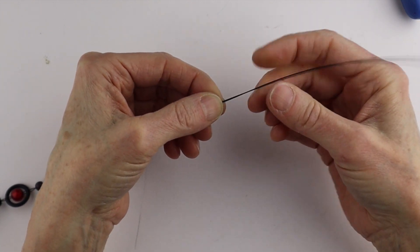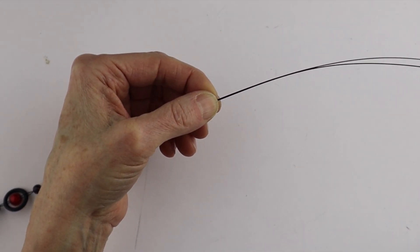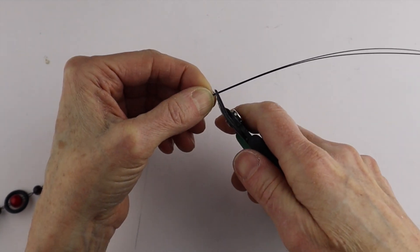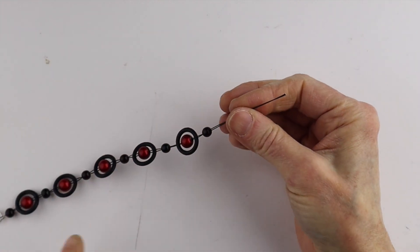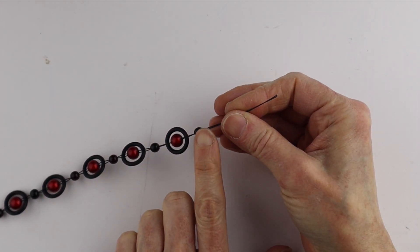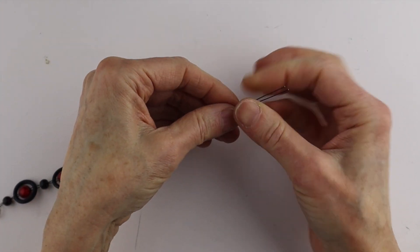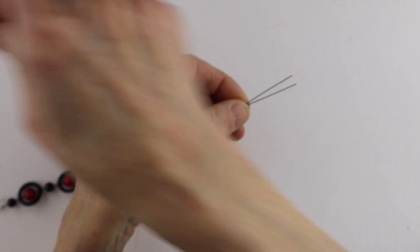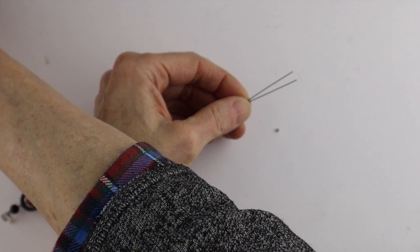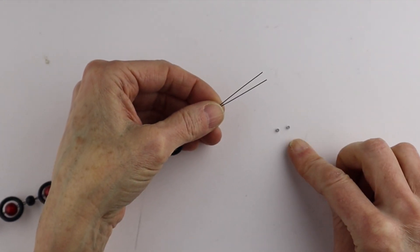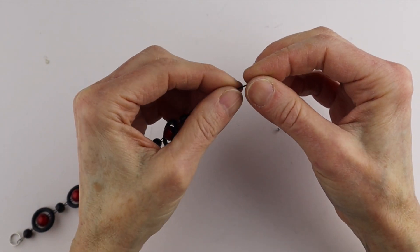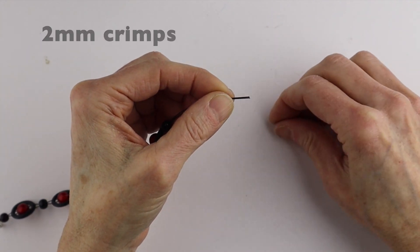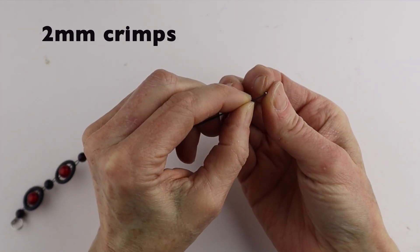If you want to trim a bit to make it easier to work with, just trim a little. Then add the clasp on the end. Take another crimp—you can even do two—and put them on the Tiger Tail.